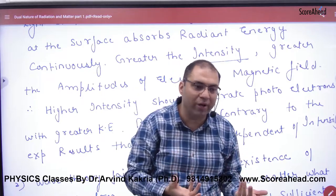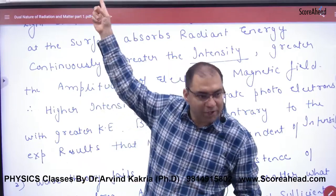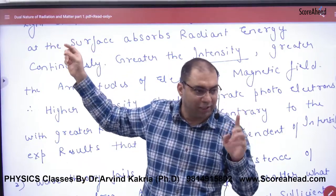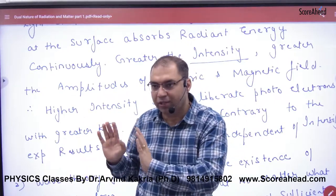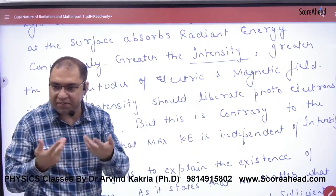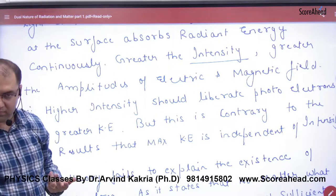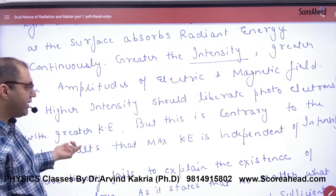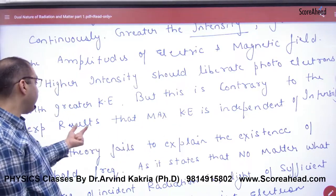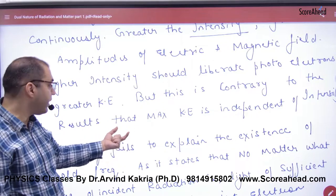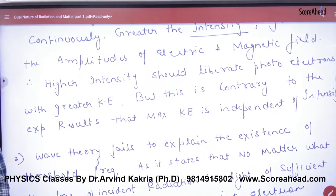But the photoelectric law says that the kinetic energy is not dependent on intensity — it's a contradiction. So either the wave theory is wrong, or the experiment is wrong, or the photoelectric laws are wrong. The wave theory says intensity more means energy more, so electrons should escape with more energy. But contrary to the experimental results, maximum kinetic energy is independent of intensity. This is a contradiction.